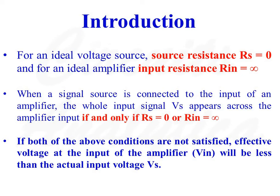If both of the above conditions are not satisfied, the effective voltage at the input of the amplifier, VIN, will be less than the actual input voltage VS, due to division of voltage across the two resistors RS and RIN.